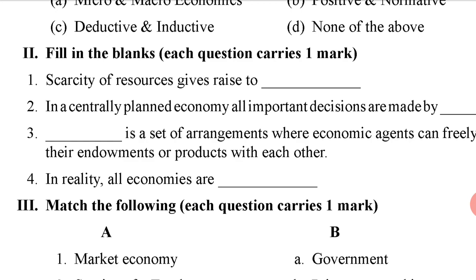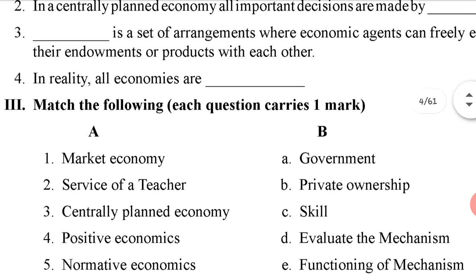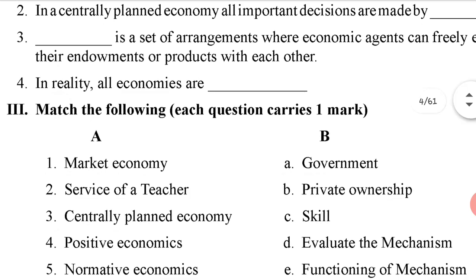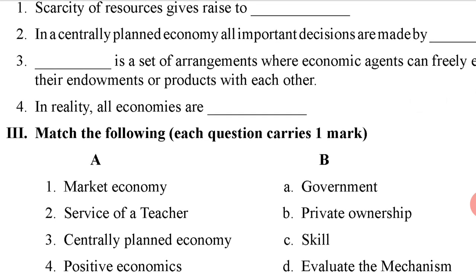Second blank: in a centrally planned economy, all important decisions are made by — we have discussed that there are three types of economies: centrally planned economy, market economy, and mixed economy. In a centrally planned economy, all economic decisions are made by the government. So the answer is government. Third blank: it is a set of arrangements where economic agents can freely exchange their endowments or products with each other.